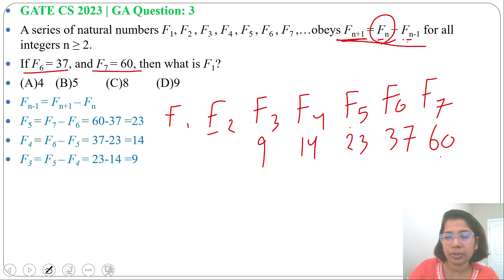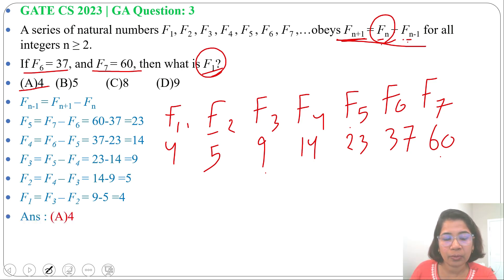Next, f(2) = f(4) - f(3) = 14 - 9 = 5. Next, f(1) = f(3) - f(2) = 9 - 5 = 4. So f(1) = 4. The question is asking about f(1), and 4 is present in option A. So the answer is option A: 4.